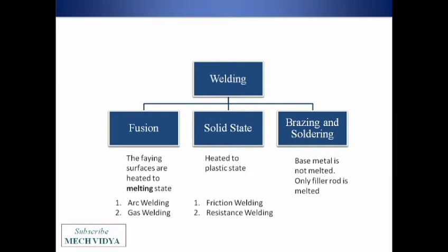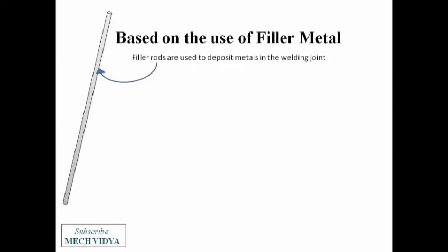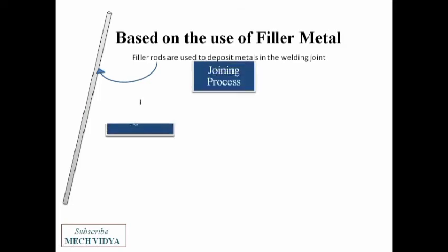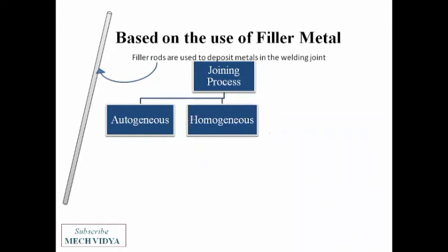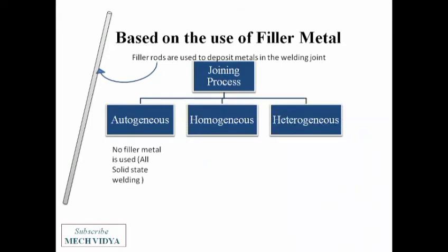One more way to classify welding techniques is on the basis of the use of filler metals. A welding process is said to be autogenous if no filler metal is used. All solid state welding techniques are usually autogenous because we don't use any filler rods there.